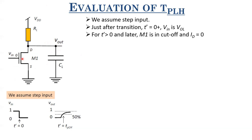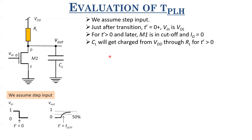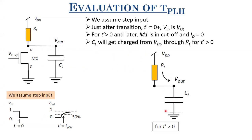In modern technologies, subthreshold current cannot be neglected entirely, but for first-order calculations and benchmarking different circuit designs, the assumption ID = 0 is fine. Once the transistor is in cutoff, VDD charges CL through RL. So CL is charged to VDD through RL for T > 0, closely resembling an RC charging circuit. TPLH is simply 0.69 × RL × CL — the time for the exponential curve to reach 50% of the output swing.